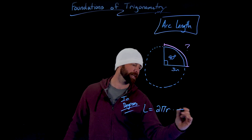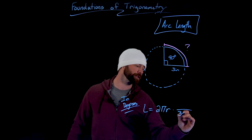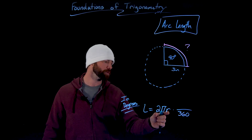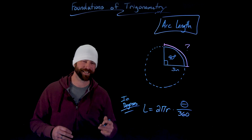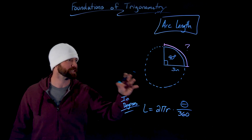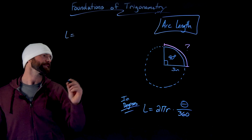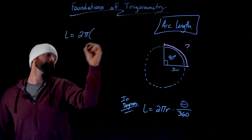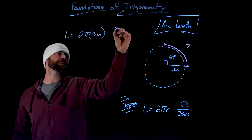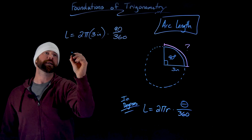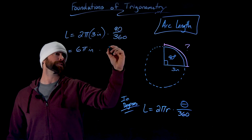What we want to do is multiply the circumference by the fractional amount of the full circle we have. A full circle is 360 degrees, so we multiply by the angle divided by 360. Because 90 degrees is one-fourth of the circle, that's what we want. So the arc length is 2π times our radius of 3 inches, times 90 over 360, which reduces to one-fourth. This gives us 6π inches times one-fourth.